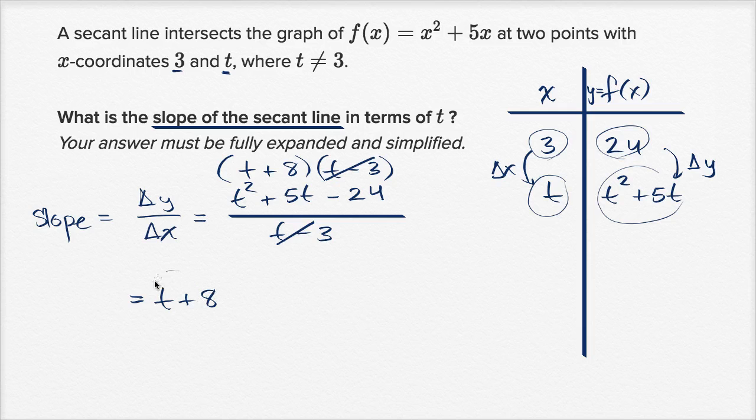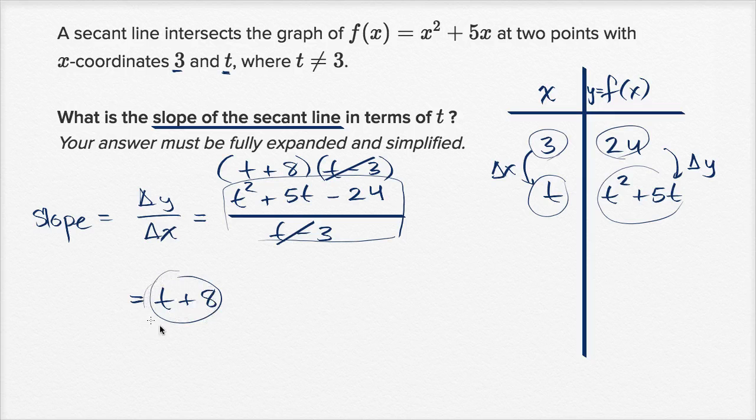Now if we wanted to be really strict, mathematically strict, this expression isn't exactly the same as our original expression right over here. What makes them different? Well, they're going to be true for all t's except where t equals 3. This thing right over here is defined at t equals 3. In fact, when t equals 3, this expression is equal to 11.